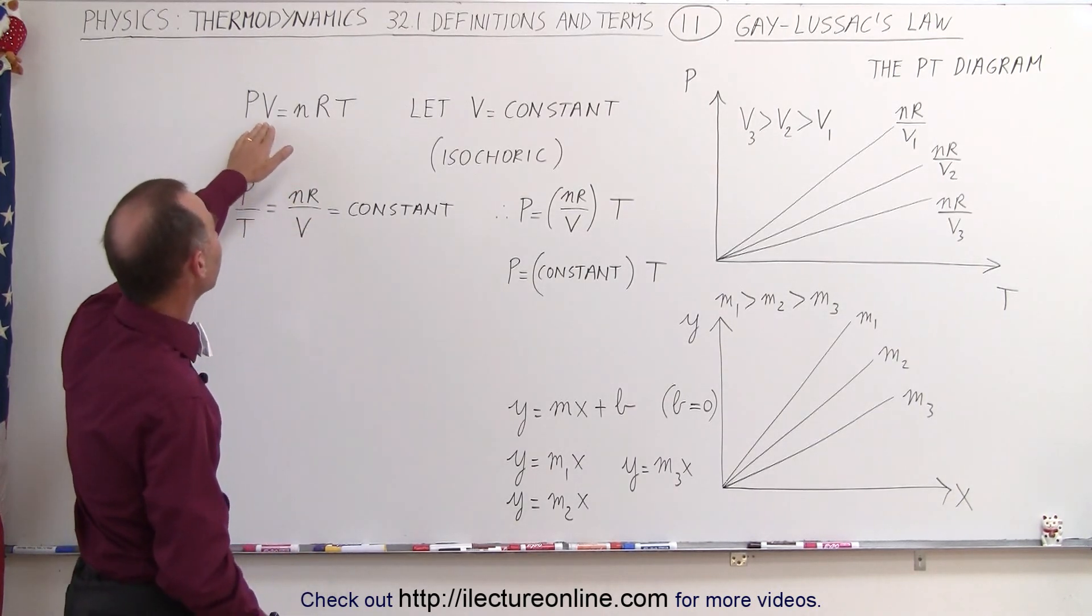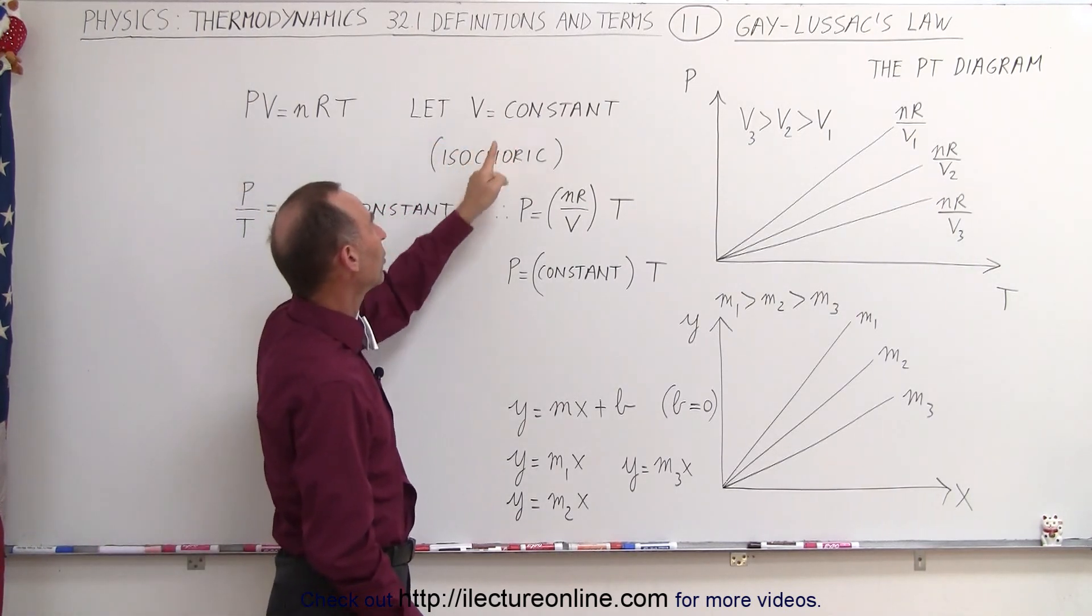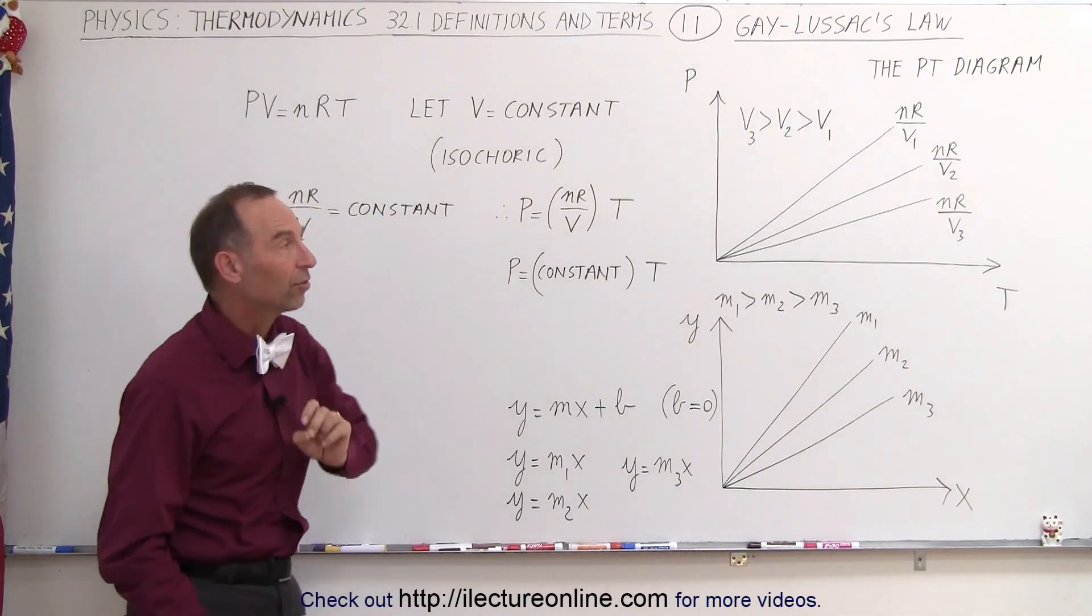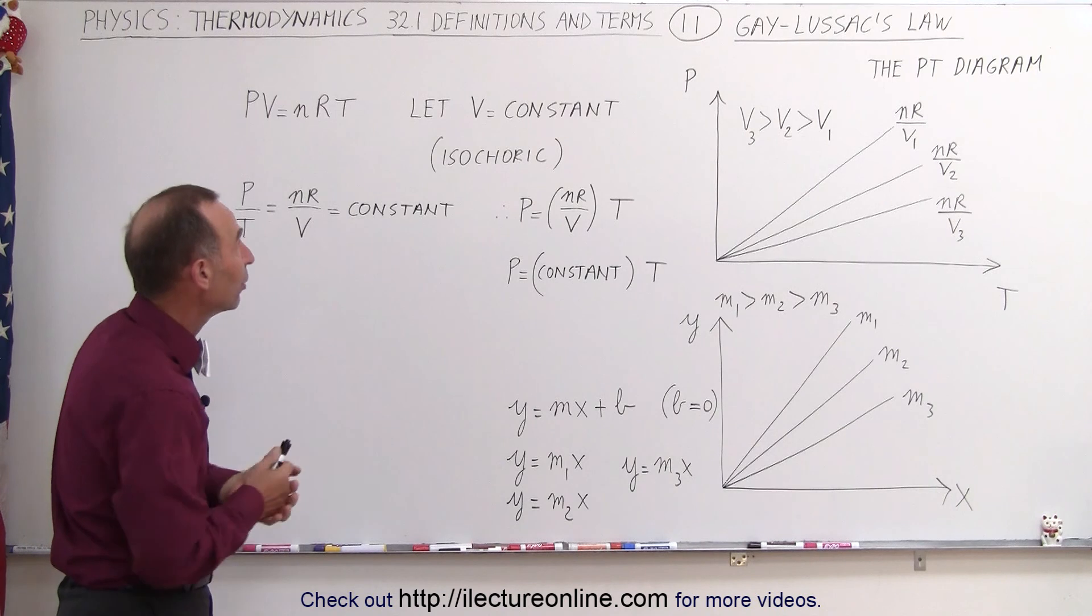Well, let's start again with the ideal gas equation, PV equals nRT. In this case, we're going to let V equal a constant, so it's an isochoric process when we go from one state to another. And that's known as Gay-Lussac's Law.